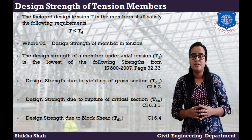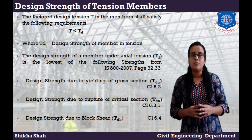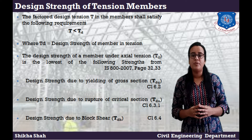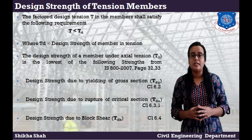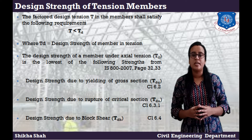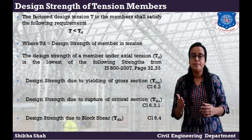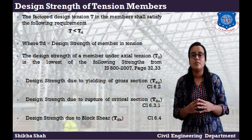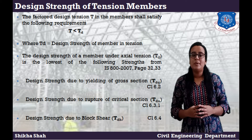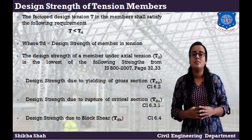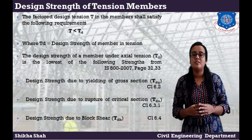Design strength of tension members: the factored design tension T in tension members shall satisfy the following requirements — T should be less than Td, where Td is the design strength of the member in tension. The design strength Td under axial tension is the lowest of the following: design strength due to yielding of cross section (Tdg), given in Clause 6.2 of IS 800:2007; design strength due to rupture of critical section (Tdn), given in Clause 6.3.1; and design strength due to block shear (Tdb), given in Clause 6.4.